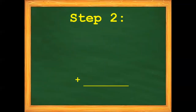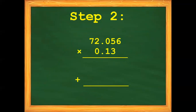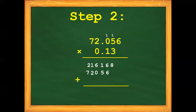Let us solve. 3 times 6 is 18, bring down 8, carry 1. 3 times 5 is 15 plus 1 is 16, carry 1. 3 times 0 is 0 plus 1 is 1. 3 times 2 is 6, and 3 times 7 is 21. Next, 1 times 6 is 6, 1 times 5 is 5, 1 times 0 is 0, 1 times 2 is 2, and 1 times 7 is 7. Last, 0 times 6 is 0, 0 times 5 is 0, 0 times 0 is 0, 0 times 2 is 0, and 0 times 7 is 0.